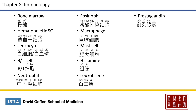Hematopoietic stem cells are 造血干细胞, 造 meaning to make or produce. Leukocyte is 白细胞 or 白血球. B and T cells are B细胞 and T细胞. Neutrophils are 中性粒细胞, 中性 meaning neutral. Eosinophil is 嗜酸性粒细胞, 酸 meaning acidic, 嗜酸 meaning acidophilic — in this case to the eosin. Macrophage is 巨噬细胞. Mast cell is 肥大细胞. Histamine is 组胺. And leukotriene is 白三烯.